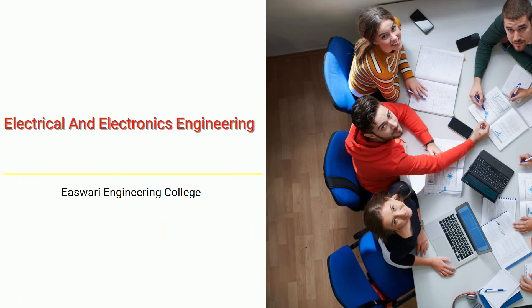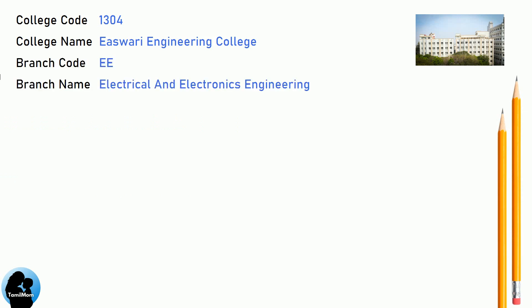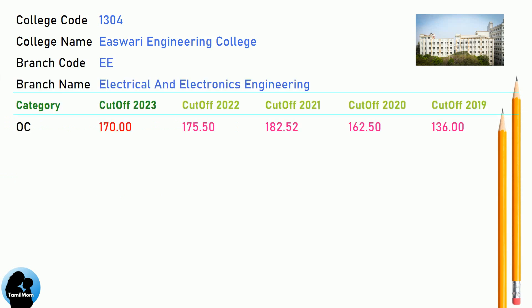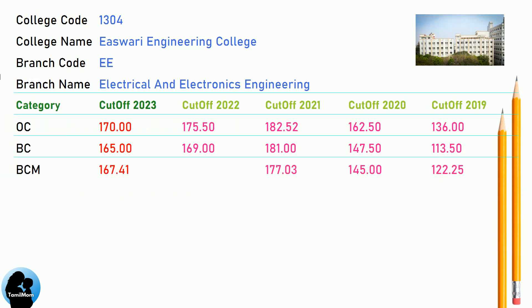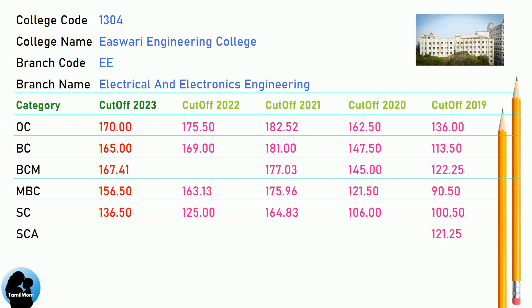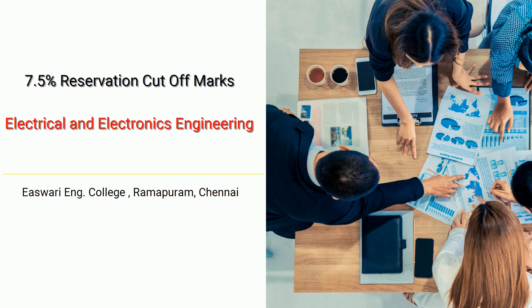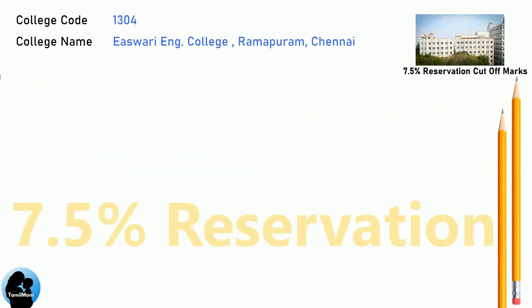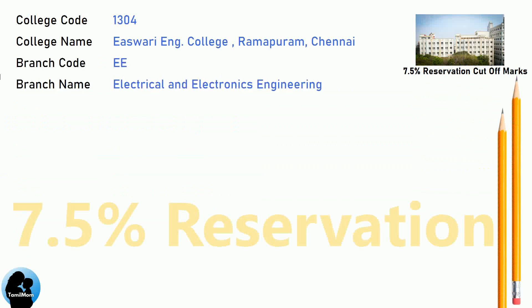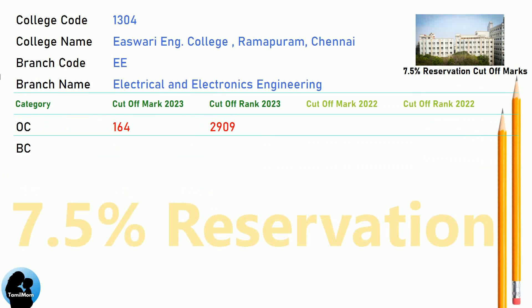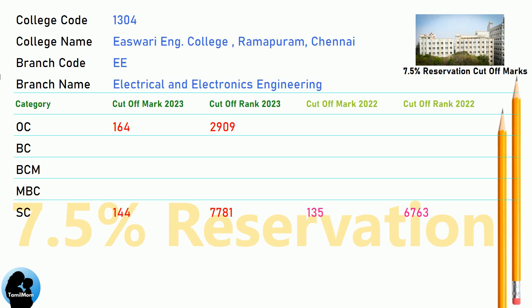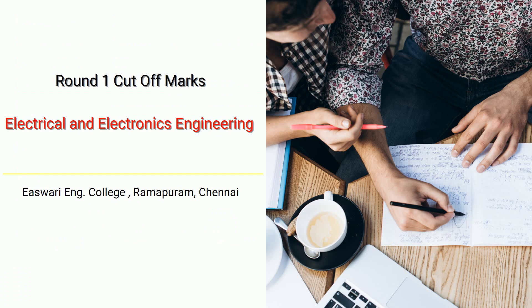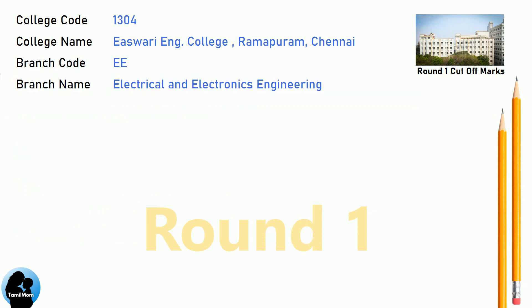DNEA Cut-Off for Eshwari Engineering College in Electrical and Electronics Engineering. DNEA 7.5 Reservation Cut-Off for Eshwari Engineering College in Electrical and Electronics Engineering. DNEA Round 1 Cut-Off for Eshwari Engineering College in Electrical and Electronics Engineering.